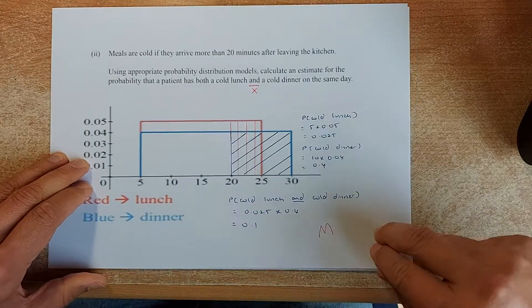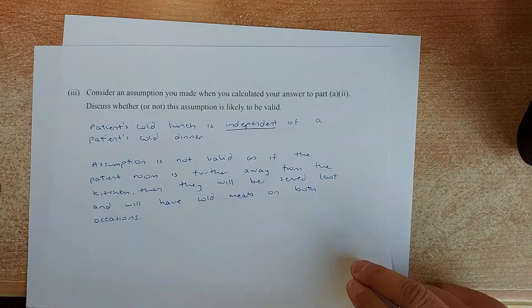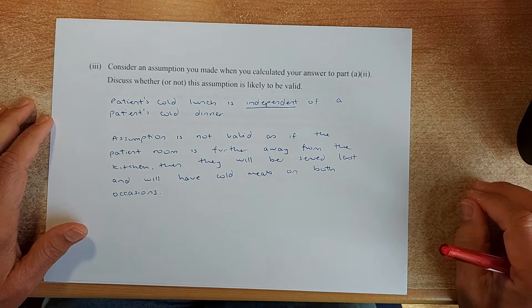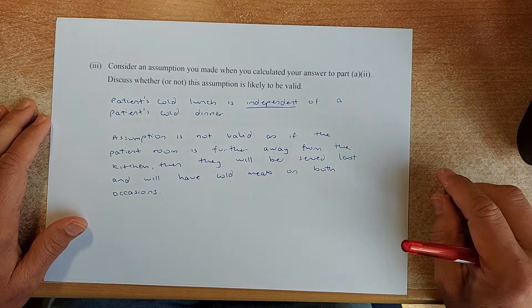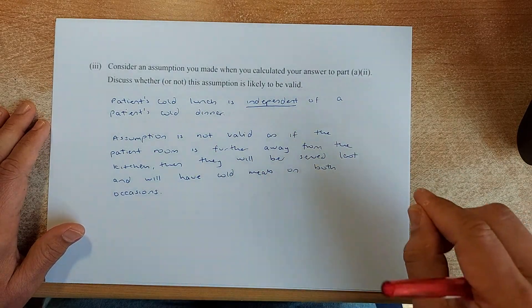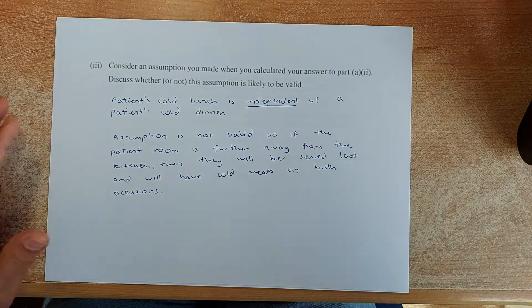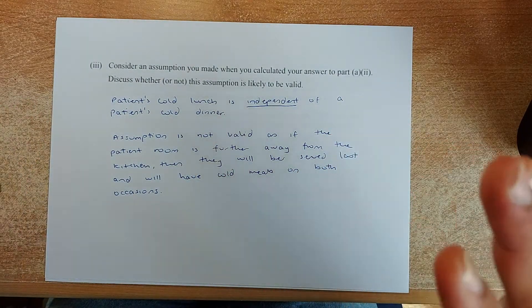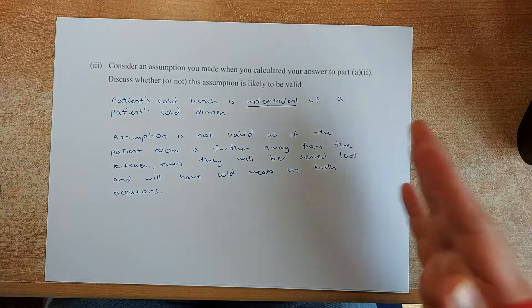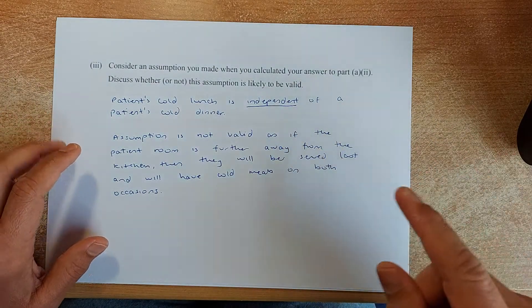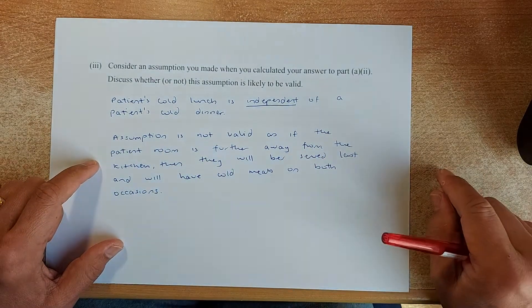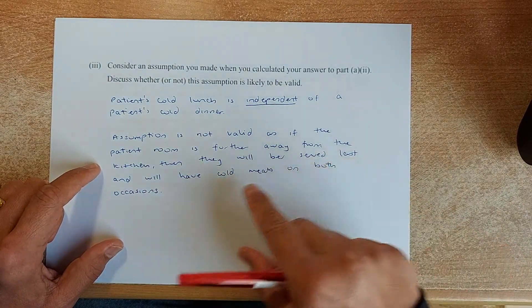Now we do some theoretical answer. The next question is an excellence. It's quite an easy excellence. Consider an assumption you made when you calculated the answer in the previous question. Discuss whether or not this assumption is to be valid. So our assumption was that the cold lunch is independent of a patient cold dinner. In other words, the assumption was that a person who gets cold lunch is not dependent on whether they get cold lunch or not in the dinner. So we are independent of each other. It's not affected by the lunch. The cold dinner is not affected by the cold lunch.